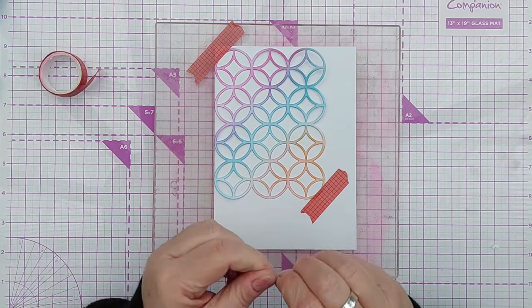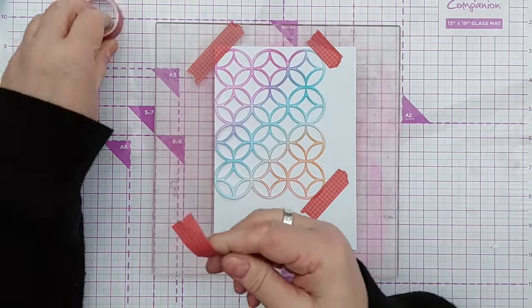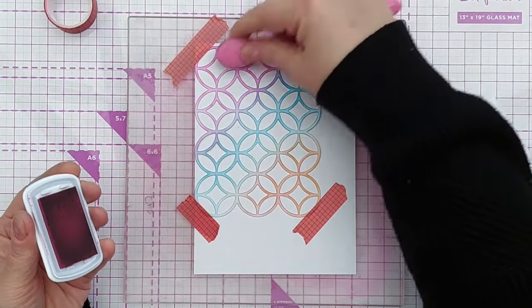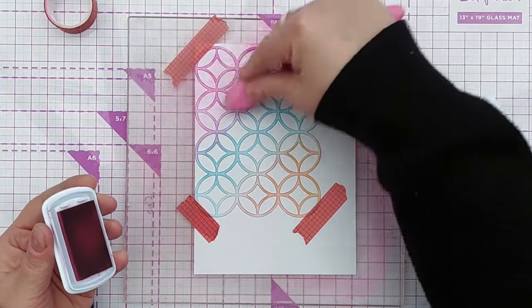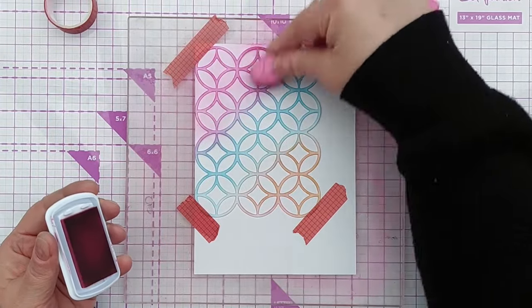Anyway, so here we are adding some inks through my stencil mask onto another piece of mixed media paper. This time anchored down with washi tape to stop it shifting, and I've chosen three colors that work nicely together.